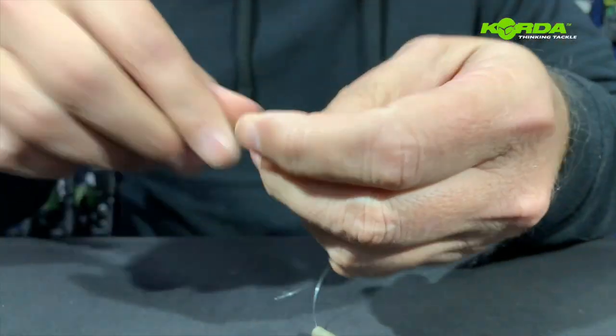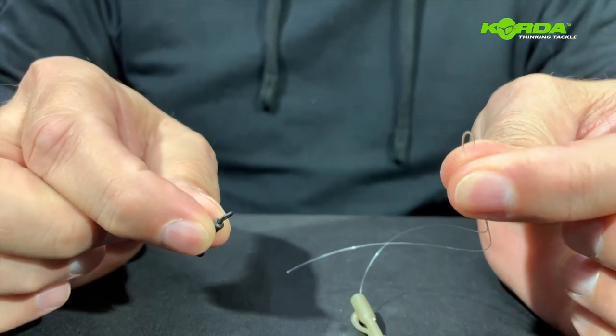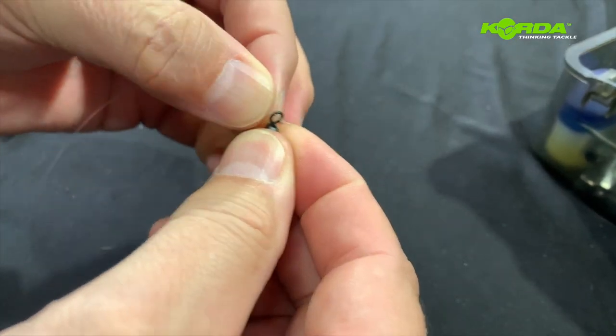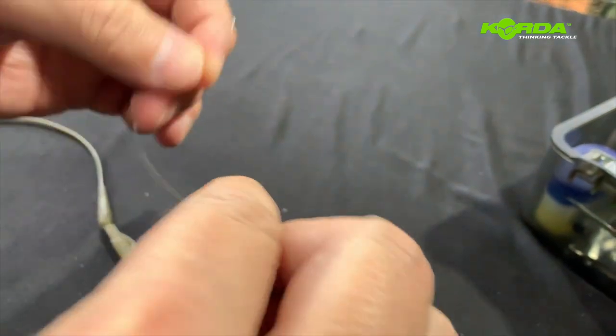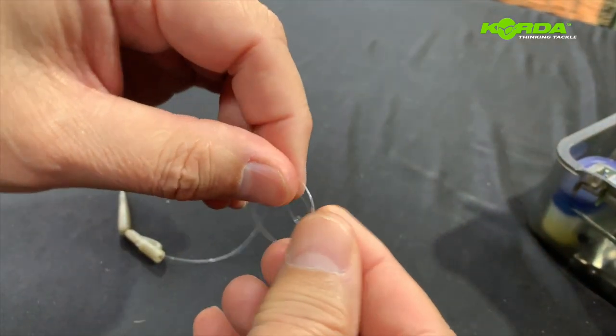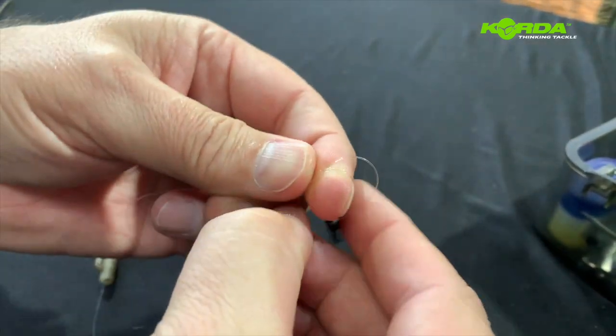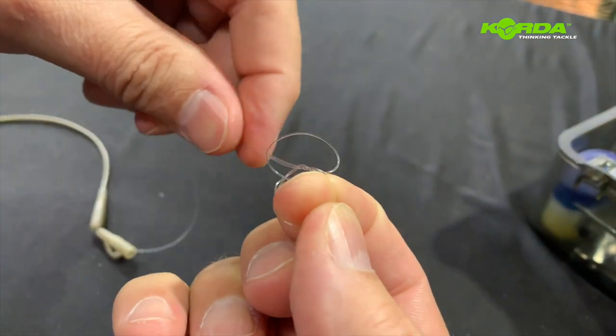What I'm going to do is attach my quick change swivel by way of a polymer knot. I'm going to fold the line double, push the line through the swivel, and then make an overhand knot like that. I stop it with my finger, then I pass everything through and I interchange my fingers.